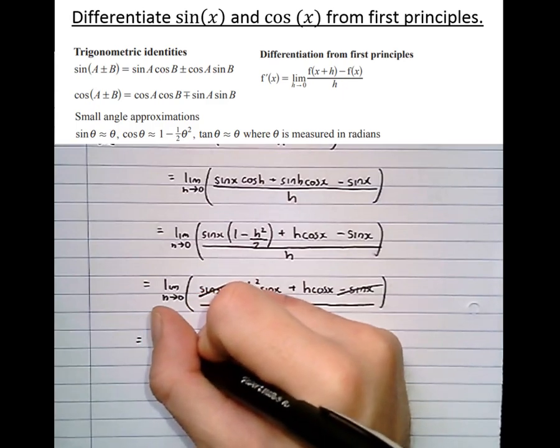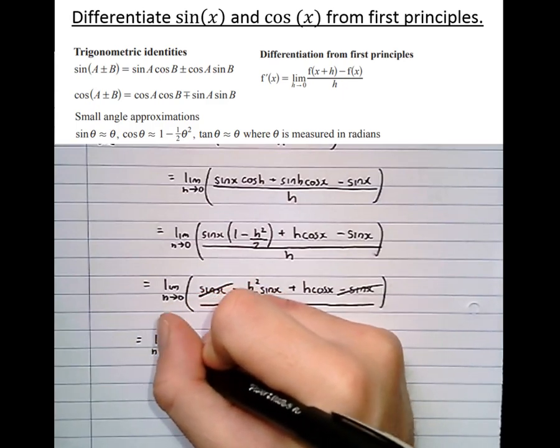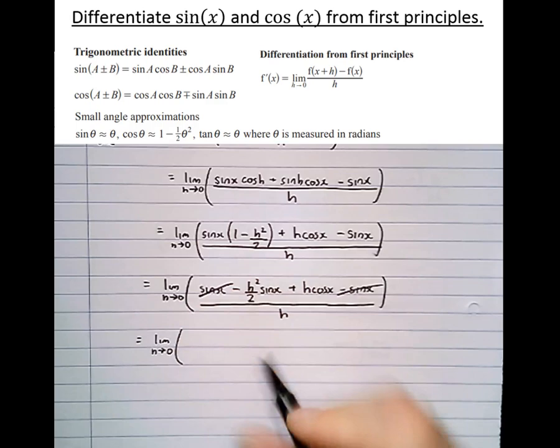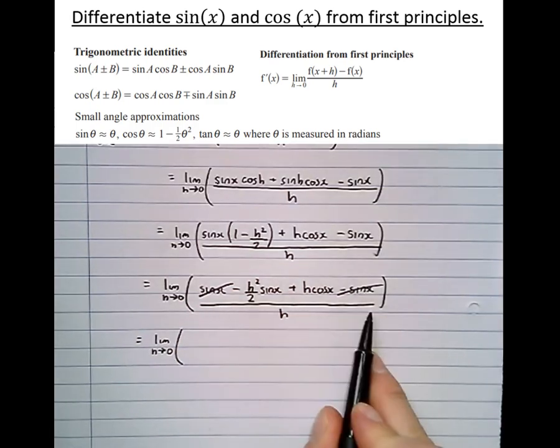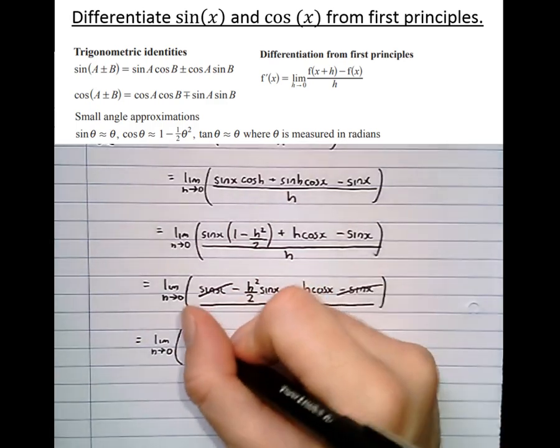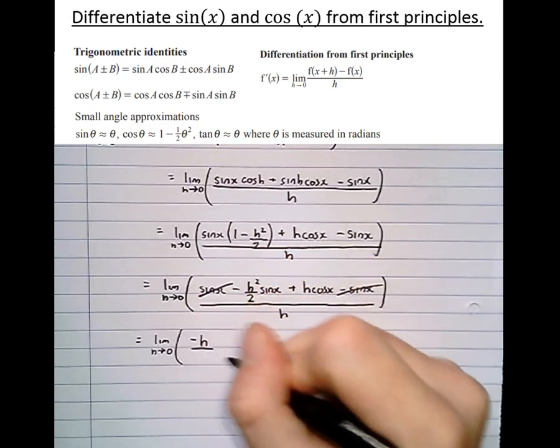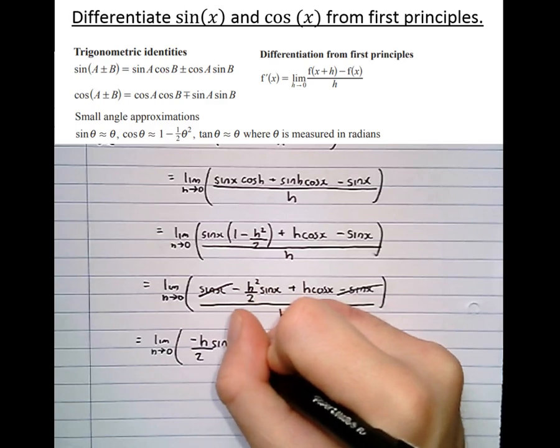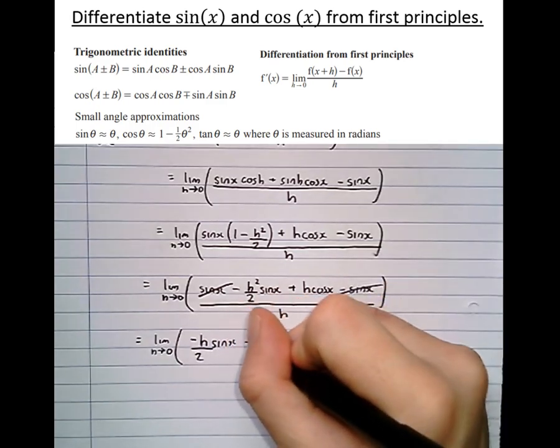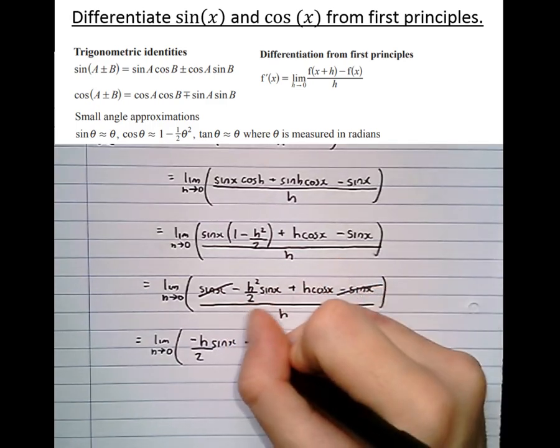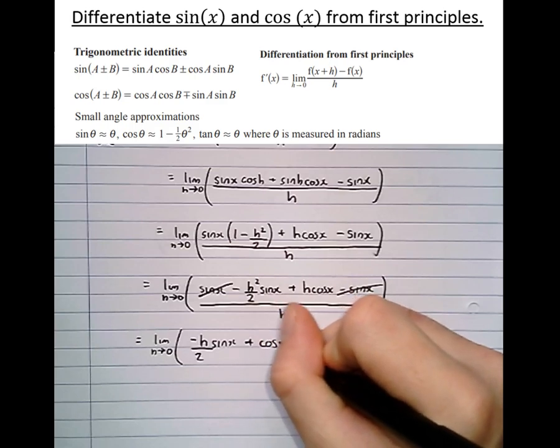Here we've got sin x take sin x, they cancel, giving the limit as h approaches 0. Dividing it all by h, the h squared just becomes h, so minus h over 2 sin x, plus then the h divided by h just gives 1, plus cos x on its own.